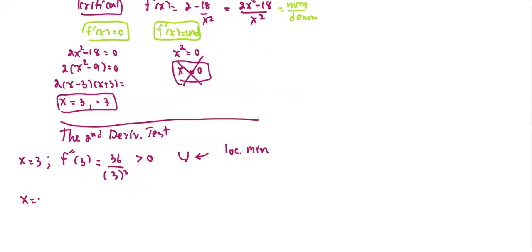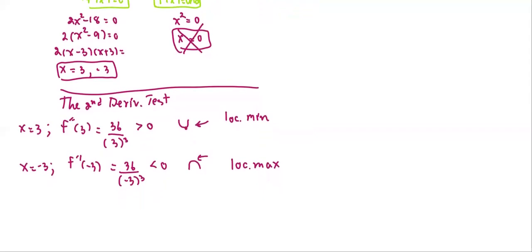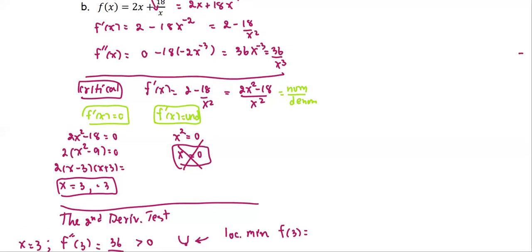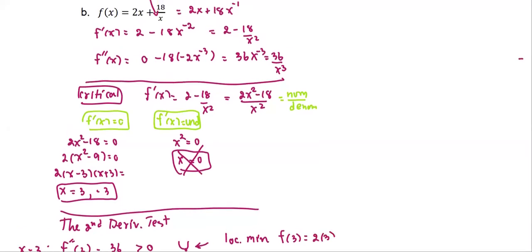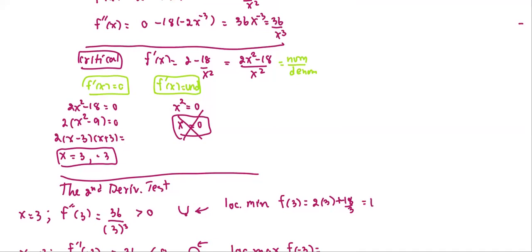At x equals negative 3, f double prime at negative 3 equals 36 over negative 3 to the third power. The sign turns out to be negative, meaning this point gives us the local maximum. To find the value, we plug in: f at 3 equals 2 times 3 plus 18 over 3, which simplifies to 6 plus 6, or 12. So the ordered pair is 3 comma 12 as the local minimum.